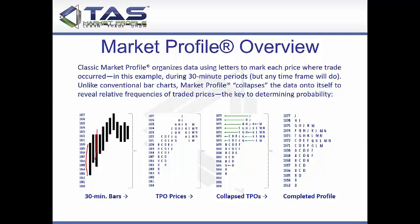What Steidlmayer had done was label these in letters B, C, D, similar to what you see here. At the end of the day, he collapsed all this information and created what we call a completed profile. These are called time-price opportunities. But we're not going to talk about time at price — we're going to talk about volume at price. This is my version of Market Profile, widely accepted across the planet by quite a few institutions.